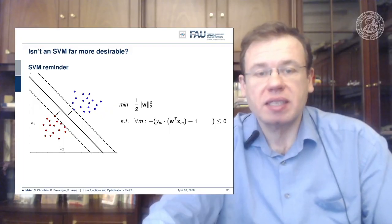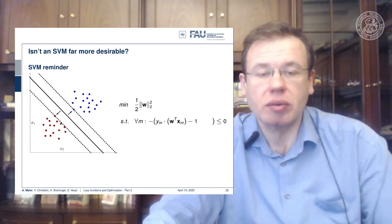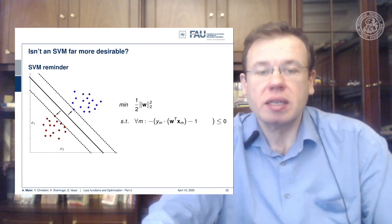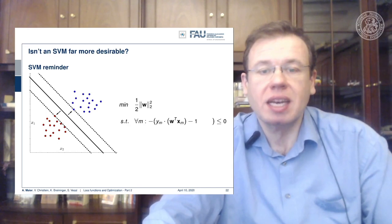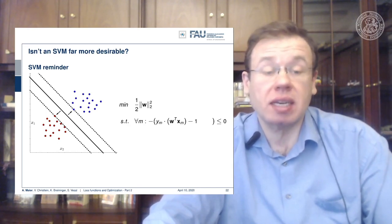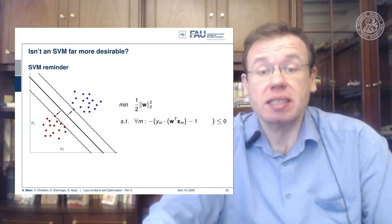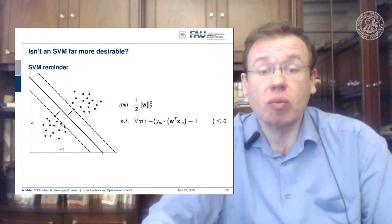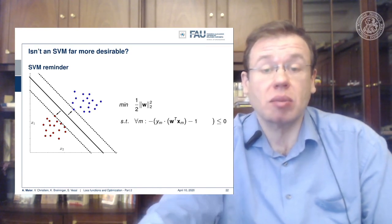Now just minimizing w would lead to the trivial solution w=0 everywhere, so you put this in a constraint optimization where you require for all observations m, for all your samples m, that they are projected onto the right side of the decision boundary. And this is introduced by this constraint minimization here. So you want to have the signed distance multiplied with the true label minus one to be smaller than zero.